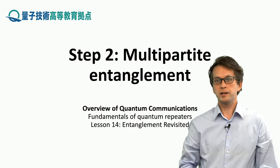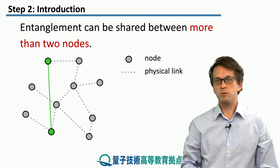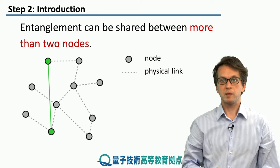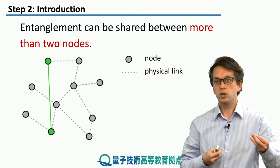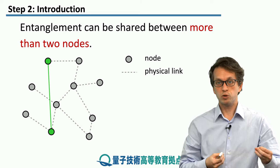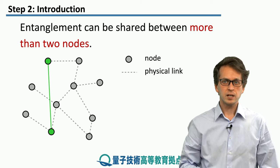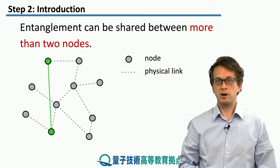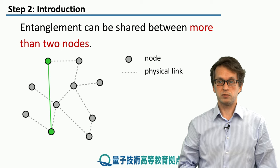Step 2: Multipartite entanglement. In the previous step we have seen how we can establish a bipartite entanglement — that means entanglement only between two nodes and between two qubits. But of course we can consider also other types of entanglement, namely entanglement between more than two nodes.